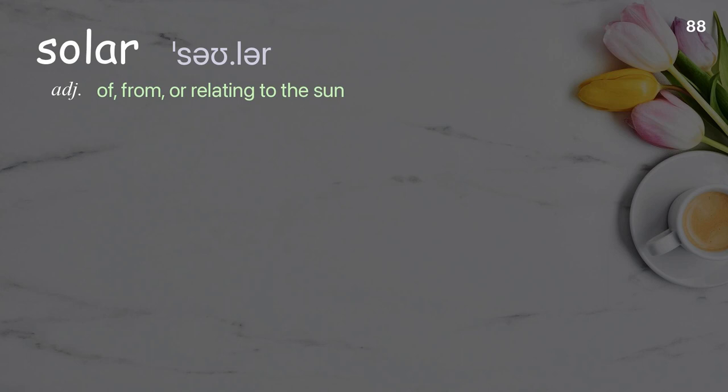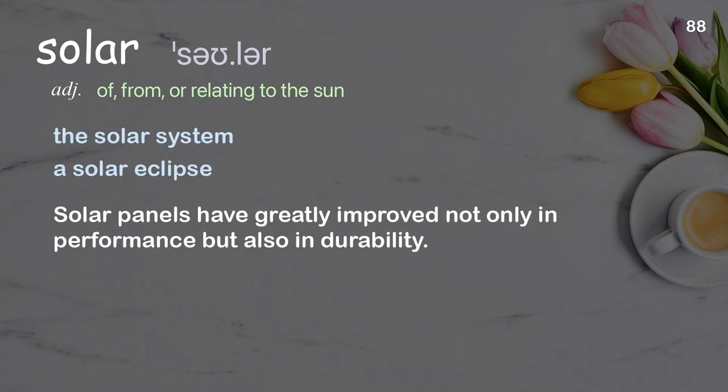Solar: Of, from, or relating to the sun. Examples: The solar system, a solar eclipse. Solar panels have greatly improved not only in performance, but also in durability.